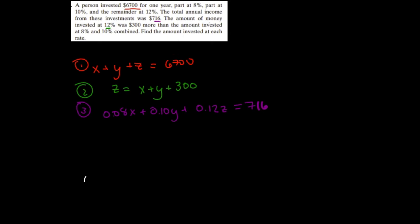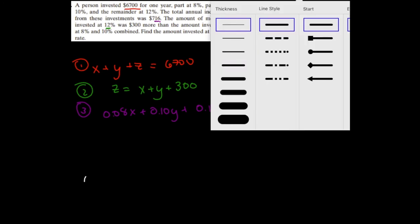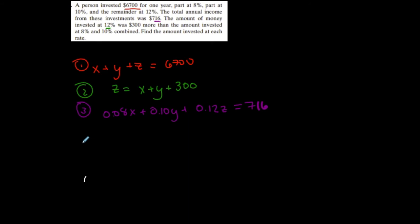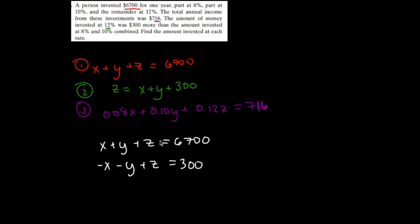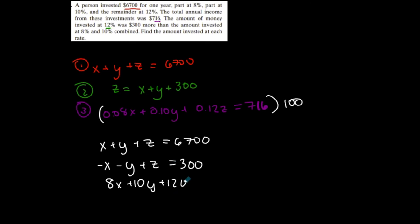I want to organize the system so it's nice and neat, with all my x's, y's, and z's lined up. Multiplying the interest equation by 100 to eliminate decimals gives 8x plus 10y plus 12z equals 71,600, making it whole numbers instead.